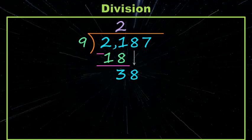How many times does nine go into 38? Goes at least four which gives me nine times four which is 36. I subtract then I bring down my seven.